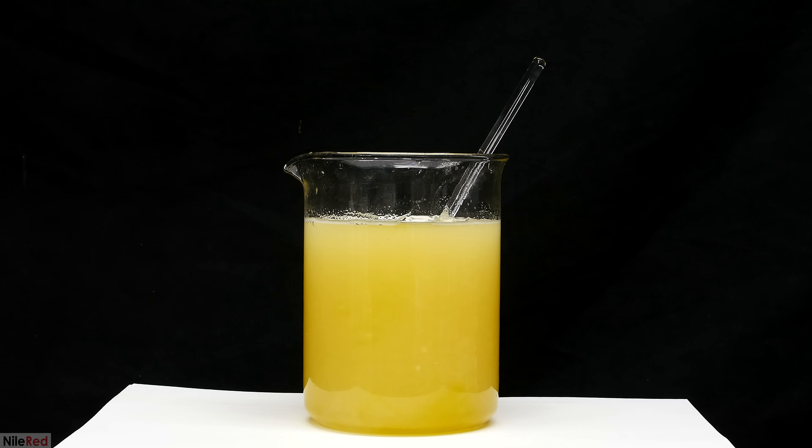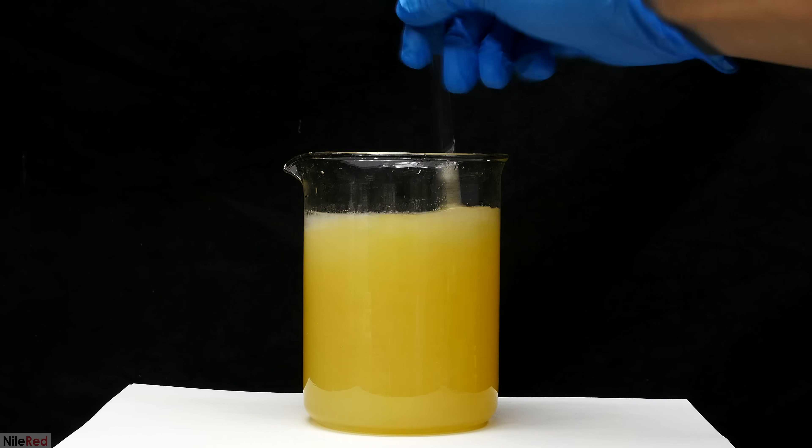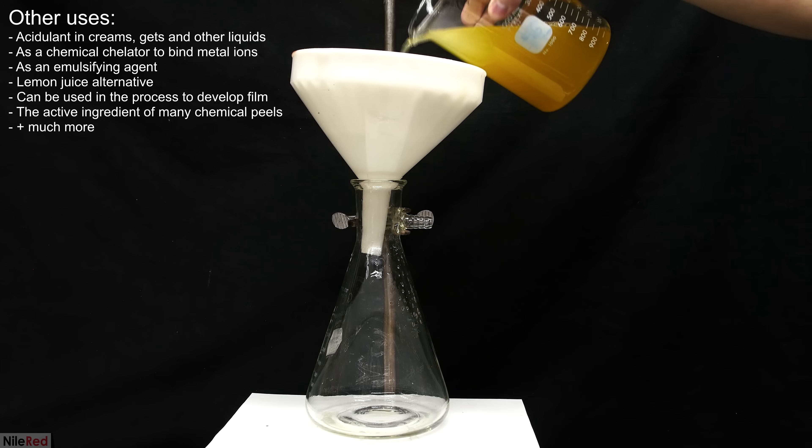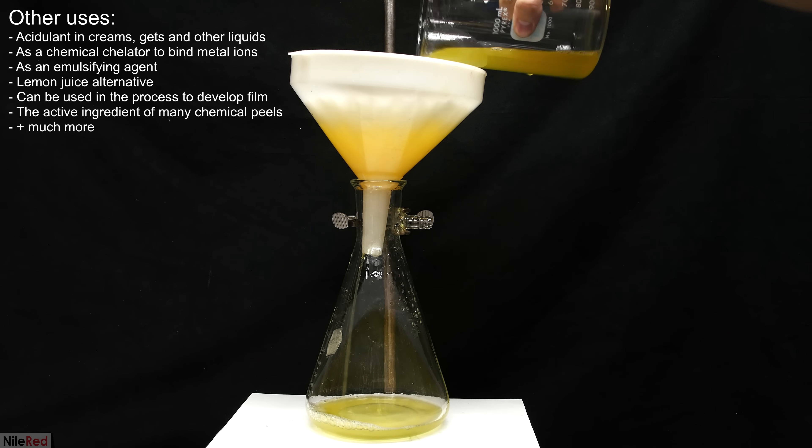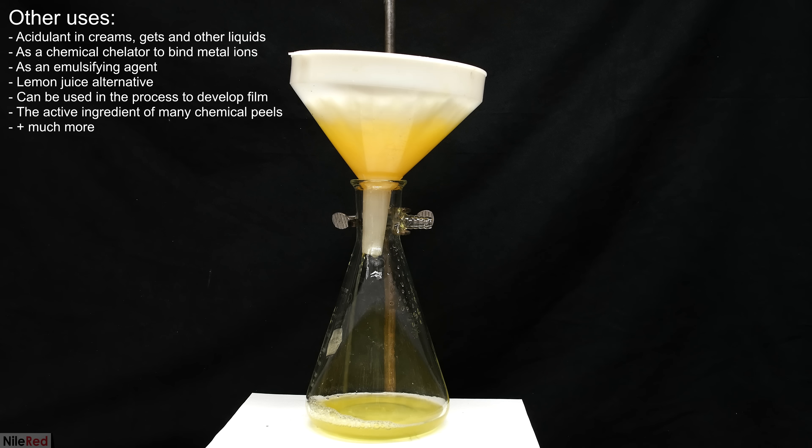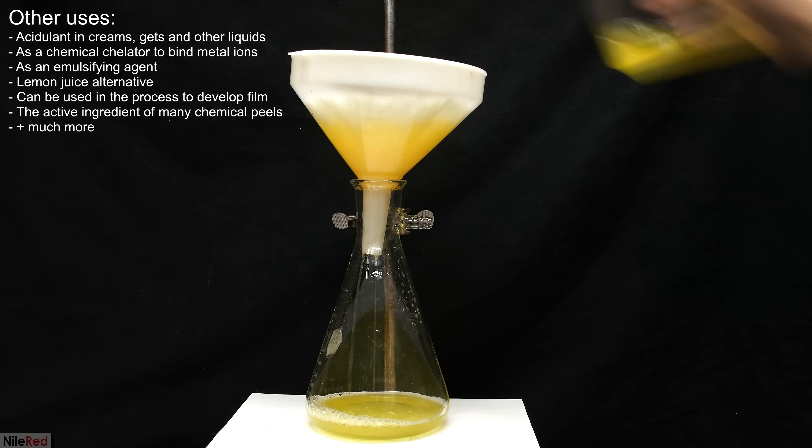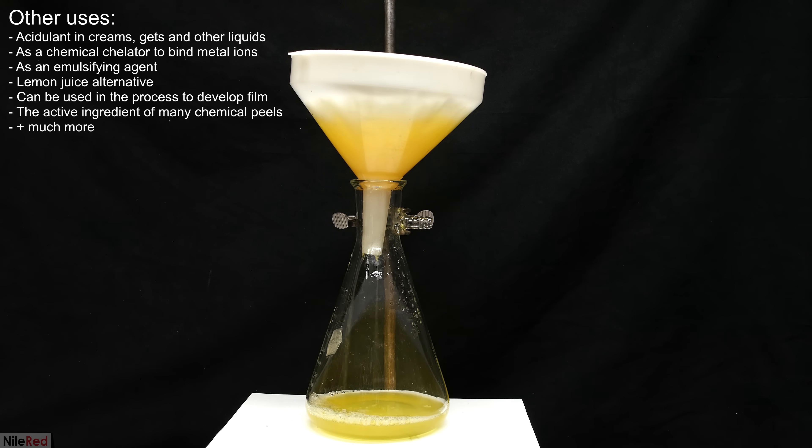The major use of citric acid is as a flavoring agent and pH balancer in foods and drinks. It has a huge variety of lesser uses though, and I've listed here some of its notable ones. In terms of chemistry, I don't have any particularly good ideas on how to use it, so if you guys have any suggestions, I'd love to hear them in the comments.